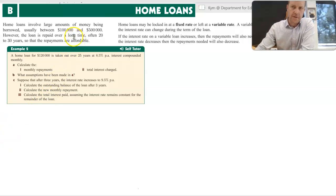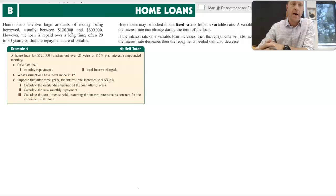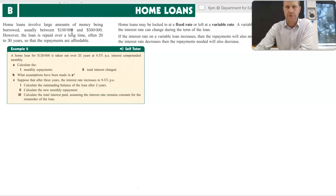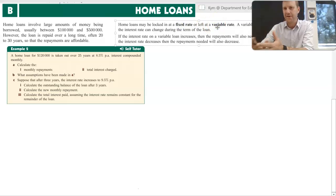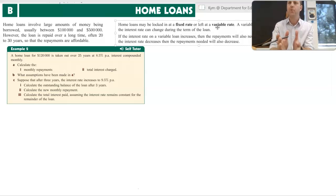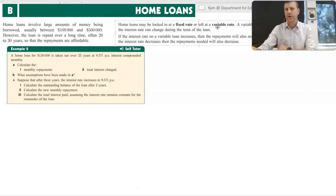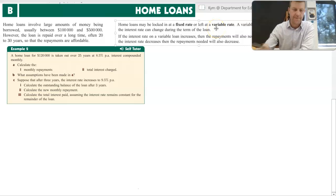Home loans obviously involve borrowing a substantially large amount of money, but paying it off over a longer period of time so that those repayments are a bit more affordable, a bit more manageable. I'm going to touch on the idea as well of fixed rates and variable rates. For the sake of this course, we'd probably use a fixed rate for a particular amount of time and it might change at a given point within a home loan because home loans can be for a longer period of time, usually between 20, 25 or 30 years even. So let's look at the first example here.